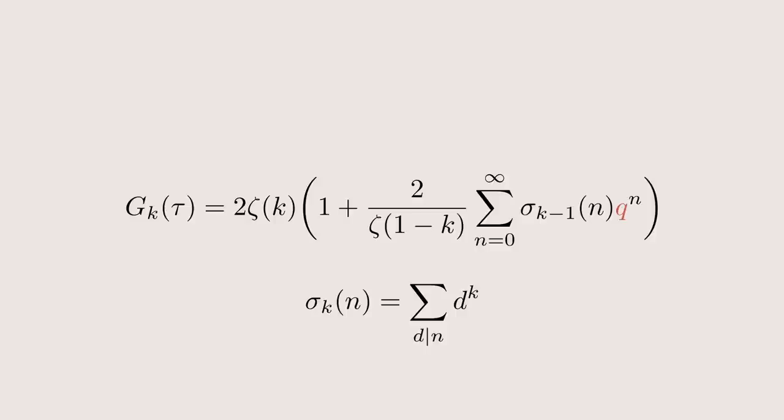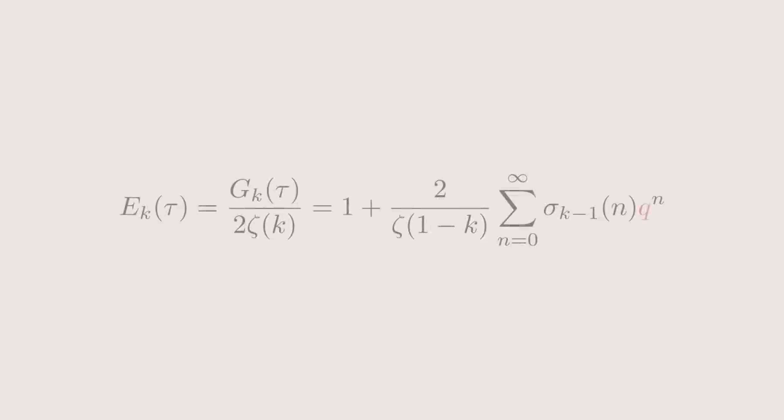In practice, however, it's often more convenient to work with the rescaled version of g, the normalized Eisenstein series, because it has a constant term of 1.